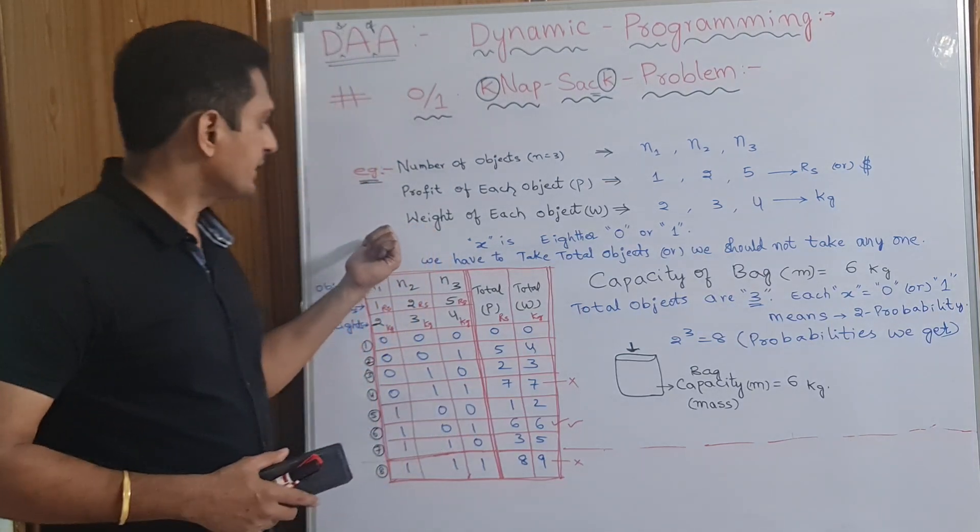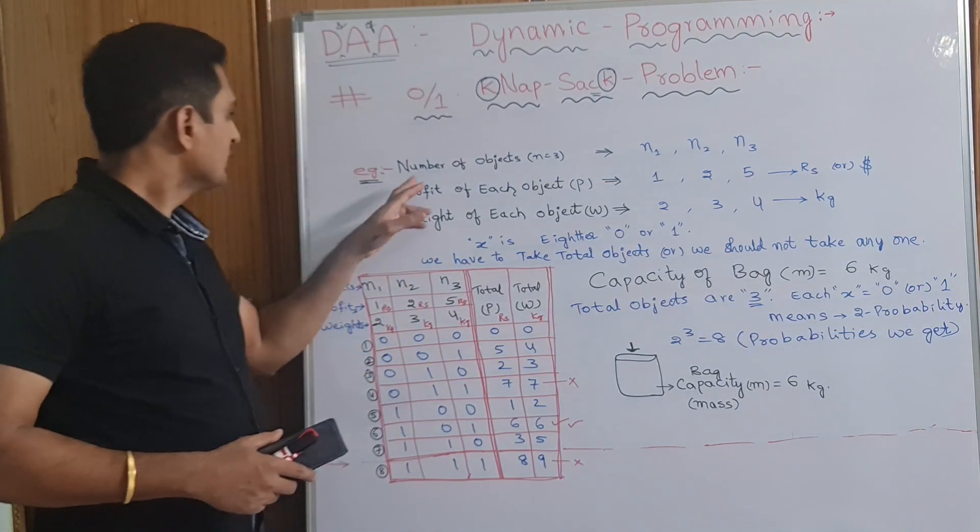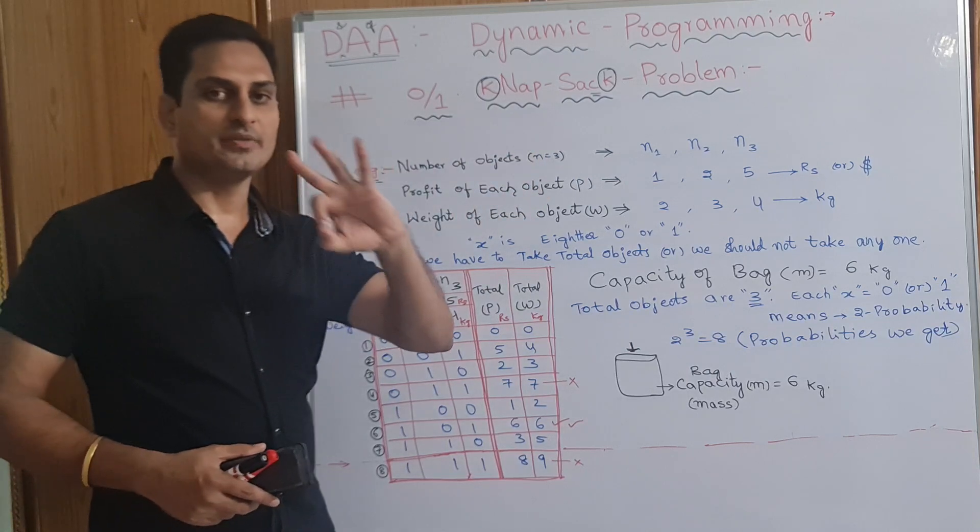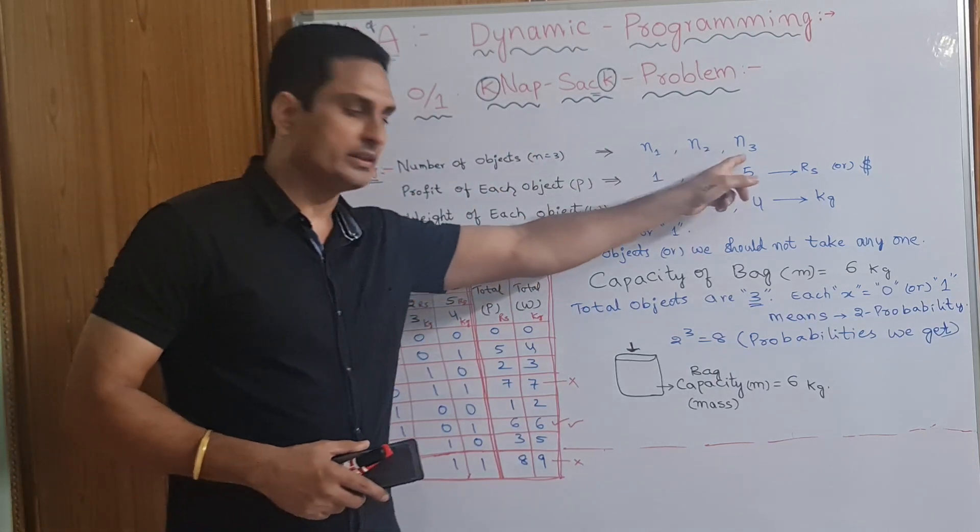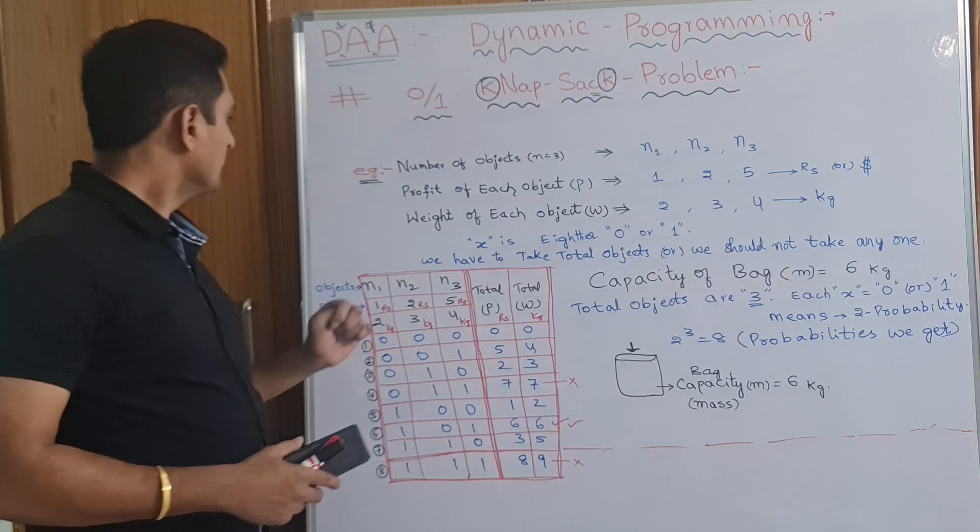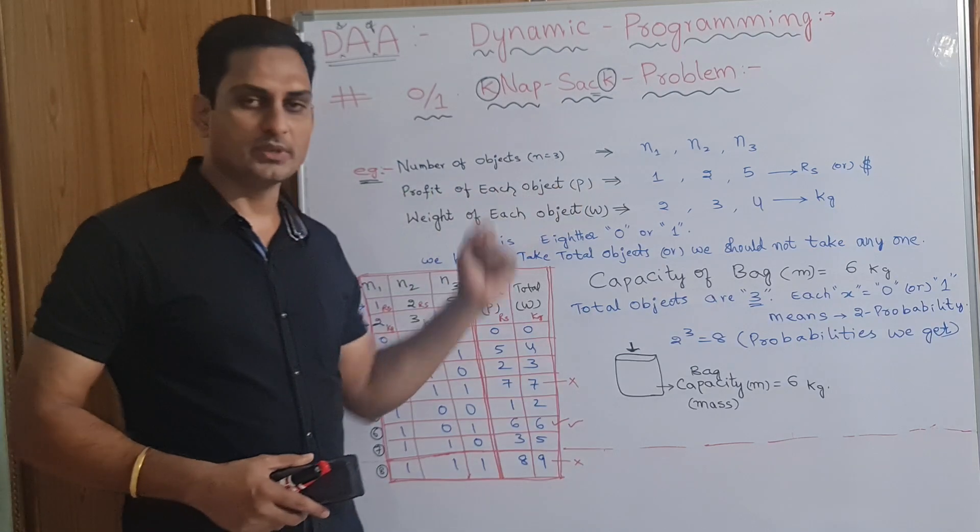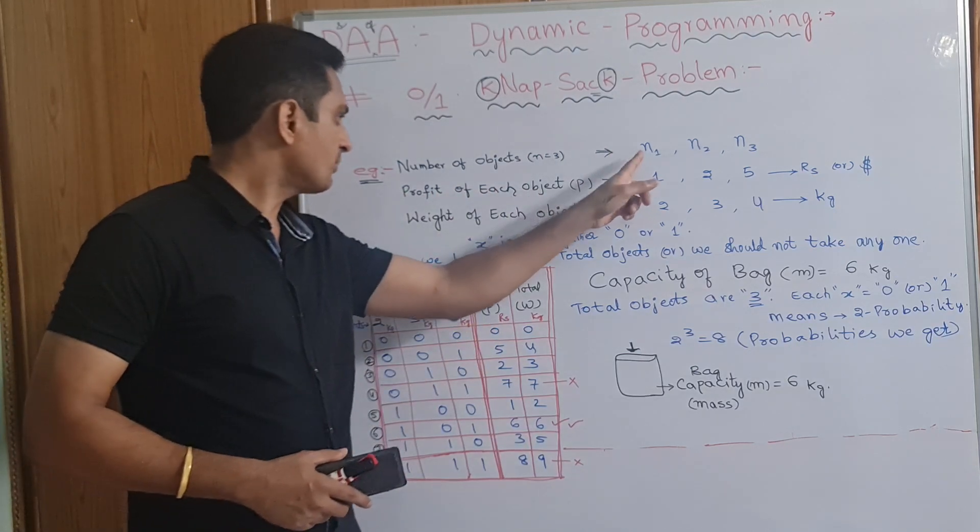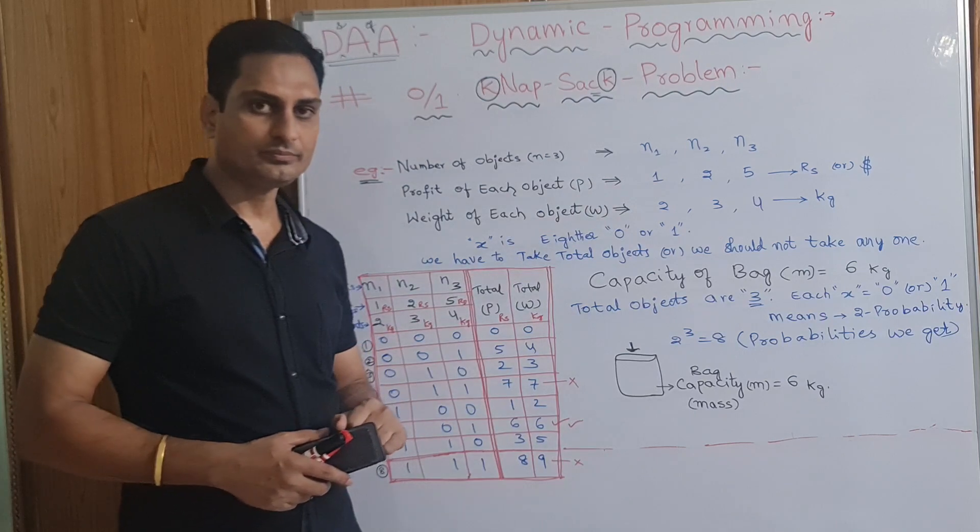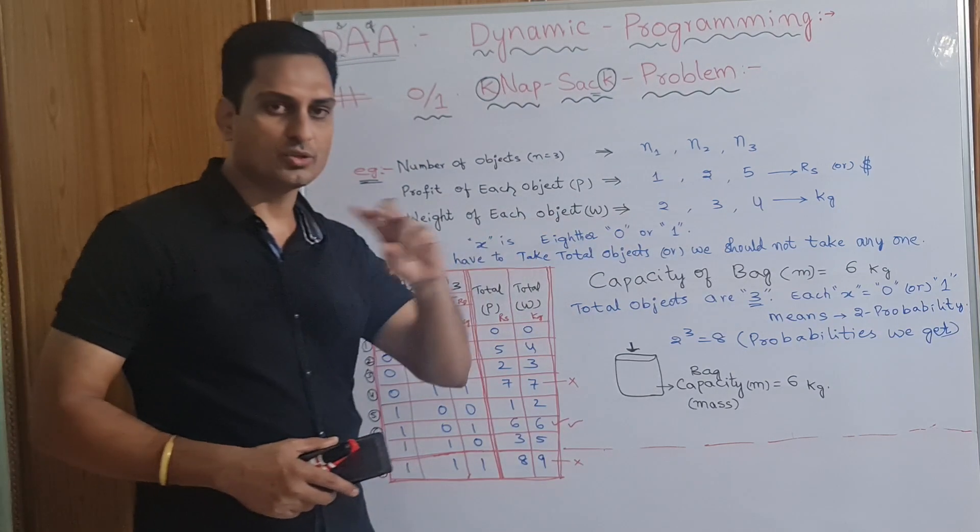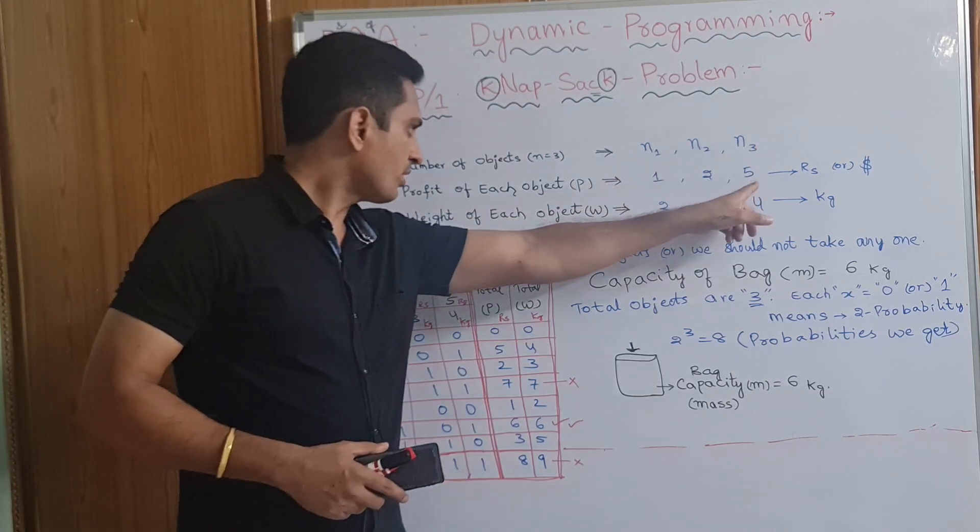Here, example, in this scenario, I have taken example from the textbook. Number of objects, we have three objects. We have N1, N2, N3. Three objects we have. And profit of each object. N1 object profit is 1, N2 object profit is 2, N3 object profit is 5.